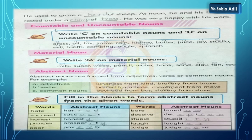Next, countable and uncountable nouns exercise. Write C on countable nouns and U on uncountable nouns. Number one: grass — we cannot count it — write U, uncountable. Oil — O-I-L — you cannot count it — uncountable, write U. Fox — F-O-X — yes, it's countable, there can be one, two, three foxes — write C. Snow — S-N-O-W — uncountable, write U. Rain — R-A-I-N — uncountable, write U.